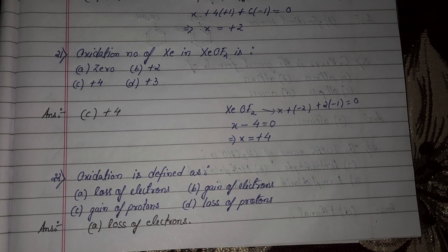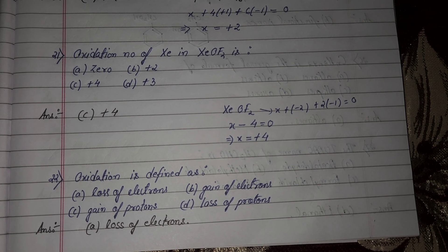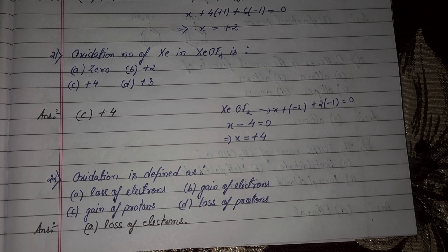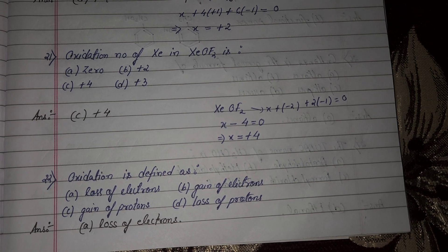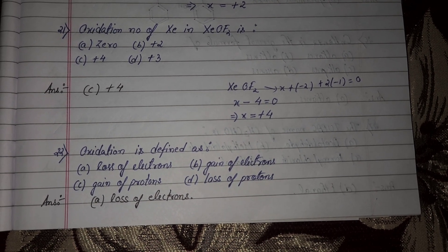Next question number 21, oxidation number of xenon in XeOF2 is? Xenon oxidation number X, oxygen minus 2, fluorine minus 1, F2 is 2 into minus 1, so X minus 4 equal to 0, X equal to plus 4.